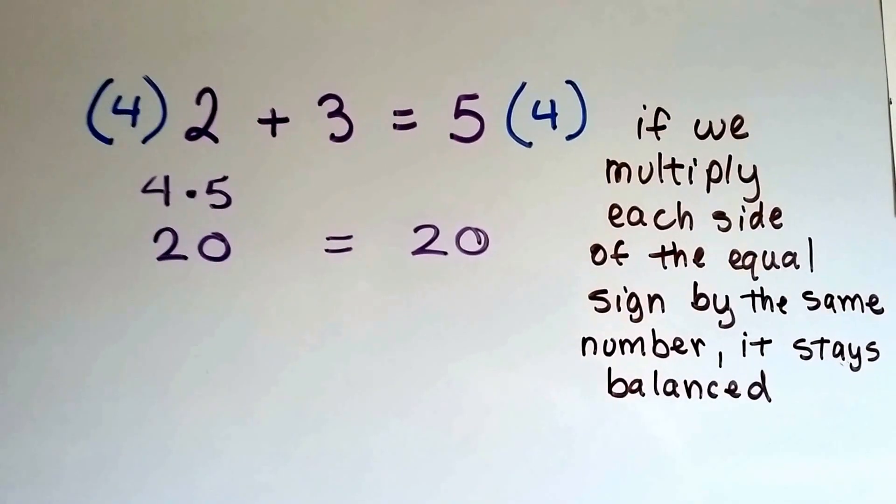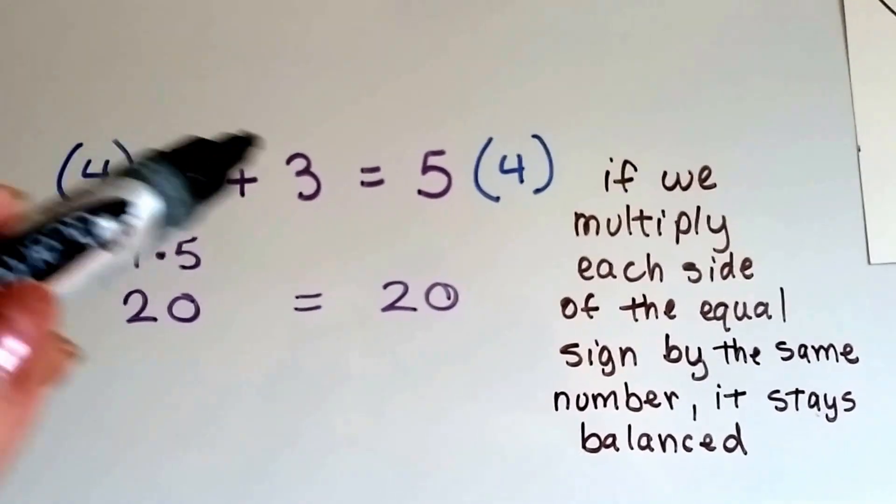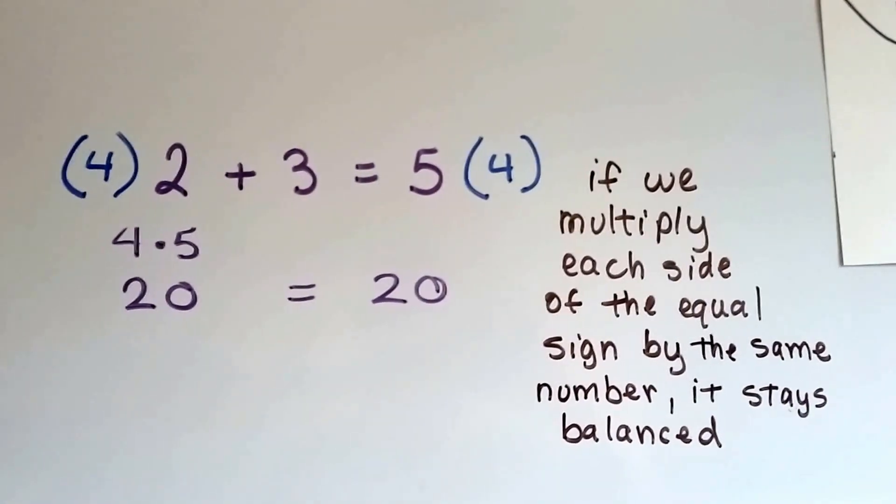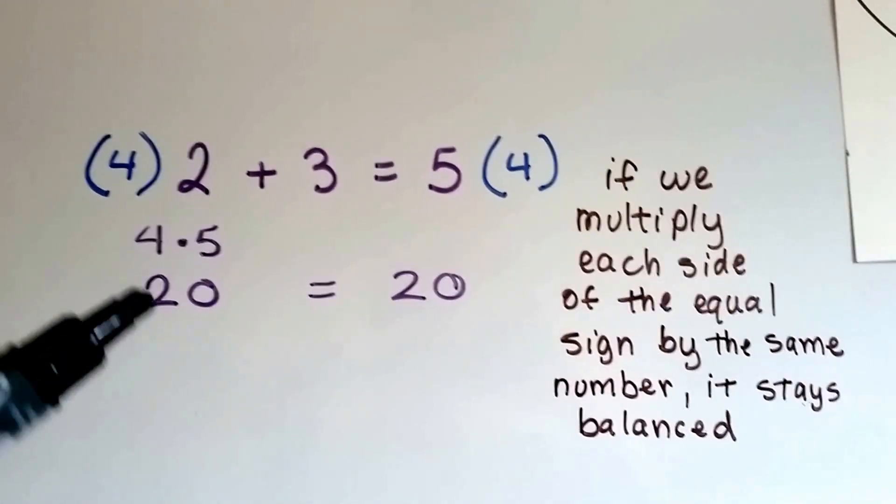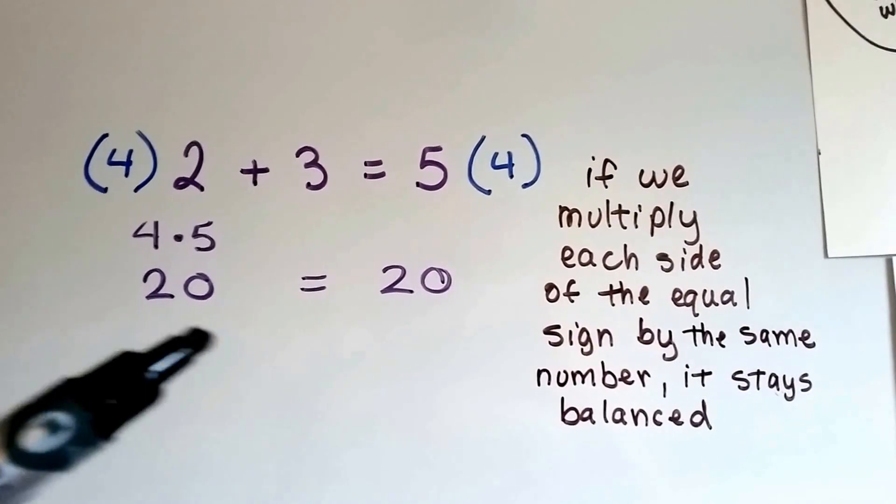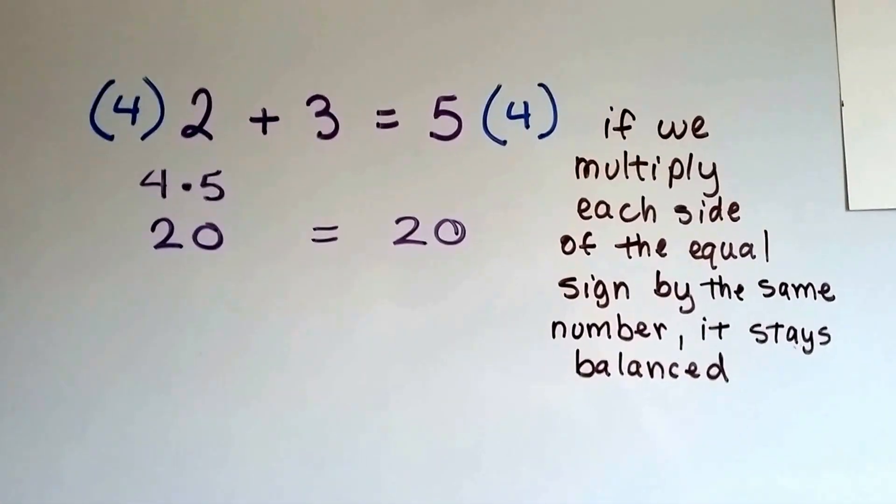If we multiply each side of the equal sign by the same number, it stays balanced. If we multiply this side of the equal sign by 4 and this side of the equal sign by 4, we get the same number, 20. 4 times 2 is 8 plus 4 times 3 is 12. That makes 20. It's 4 times 5. It's still balanced. 20 equals 20.